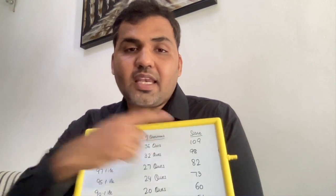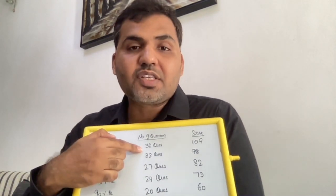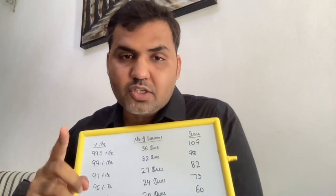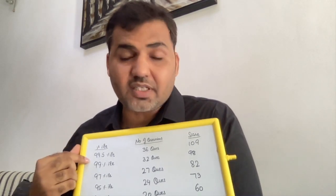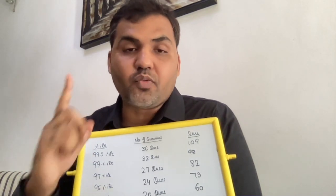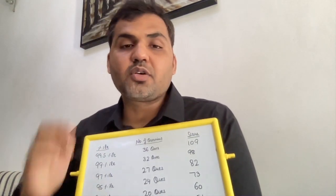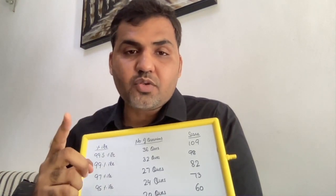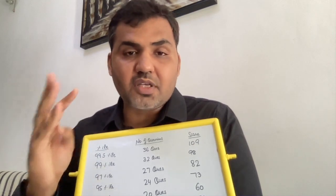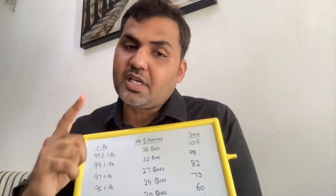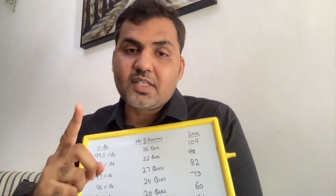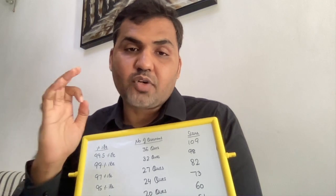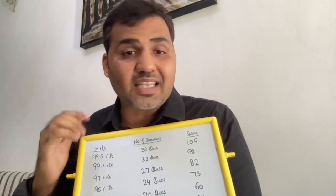That means 36 is the number of questions you need to do correct. Now, 36 questions across three sections to get 99.5 percentile. If you can manage one section with 14 to 16 questions, your task becomes very easy. That one strong section can be Quant, DILR, or VARC — it depends on your strength area. The rest of the two sections you only need to attempt 10 to 12 questions each, and you're through to 99.5 percentile.